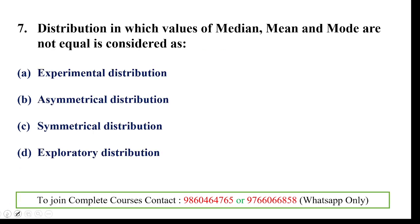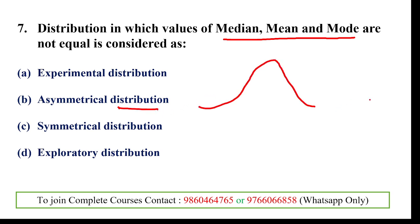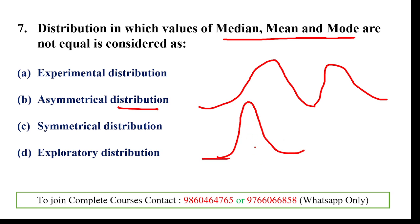Next question: a distribution in which values of median, mean, and mode are not equal is considered as — when mean = median = mode, the distribution is symmetrical. But here the three measures are not equal, so it gives an asymmetric distribution — either left-skewed or right-skewed.